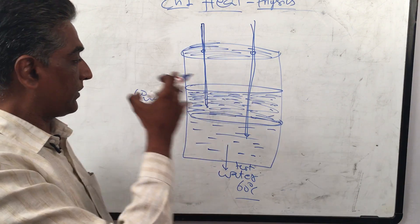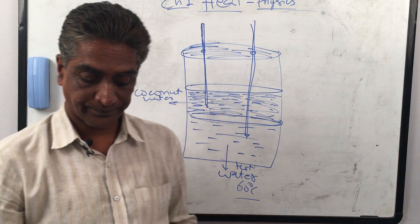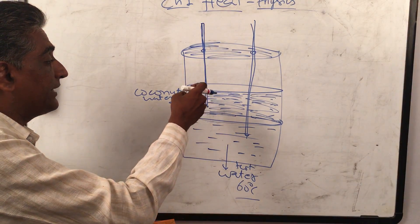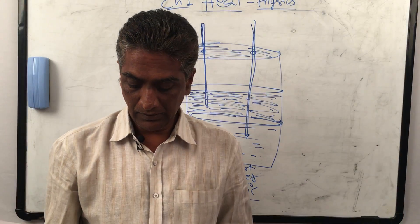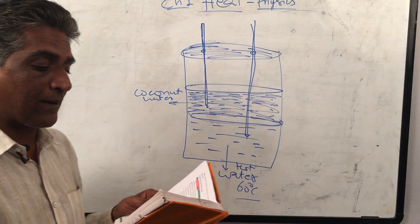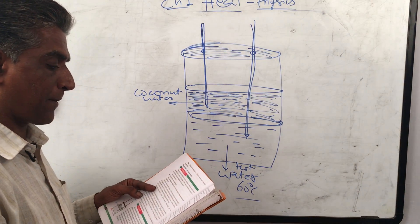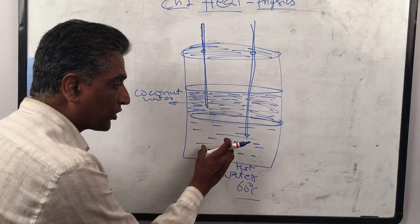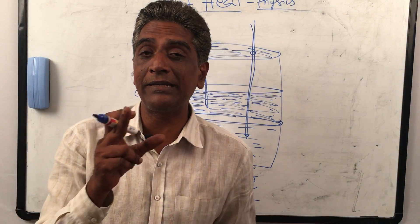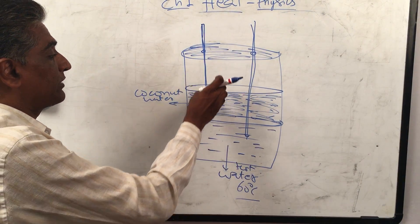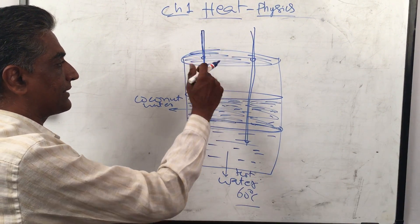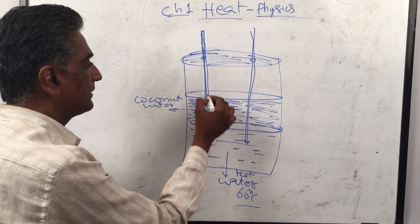This is water and this is coconut oil — now observe the readings of the two thermometers. The reading of the thermometer kept in water decreases, because this is hot water. At the same time, the reading of the thermometer kept in the oil increases, because the oil is colder than the water.